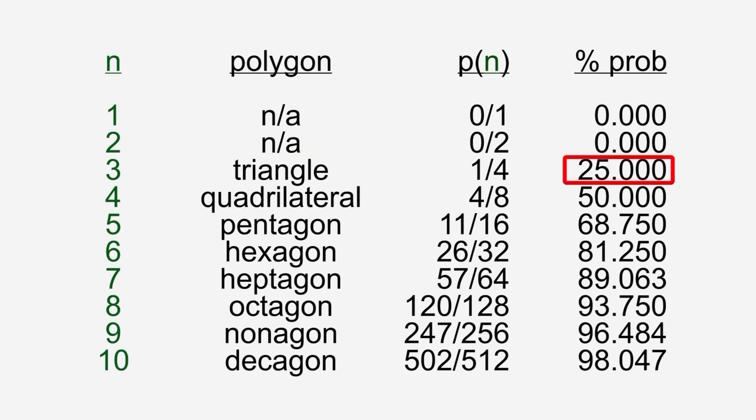For n equals 3, we can generate a triangle 25% of the time. This is the only polygon where failure is more likely than success. For n equals 4, quadrilaterals are formed 50% of the time. For any n greater than 4, we are more likely than not to form a polygon.